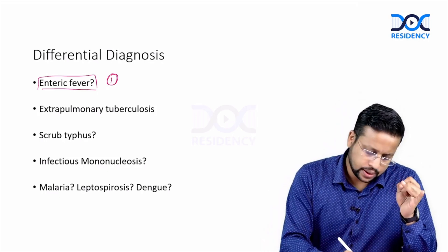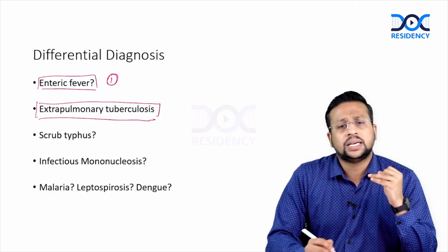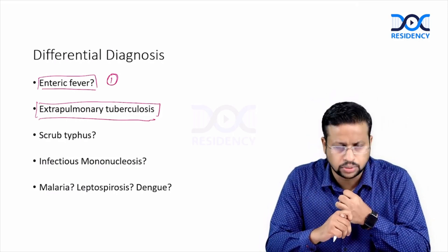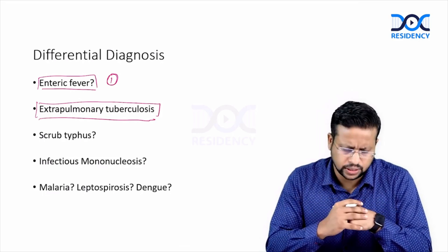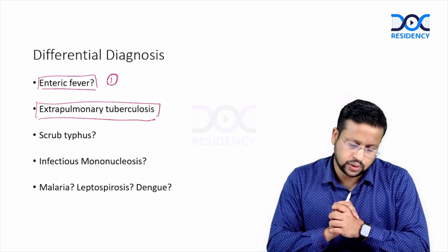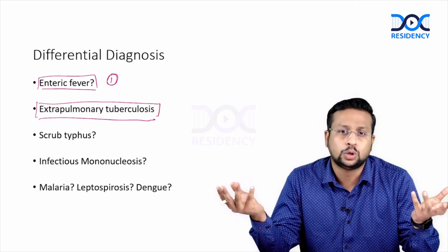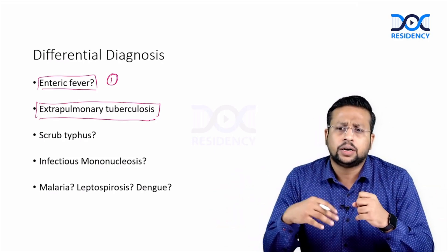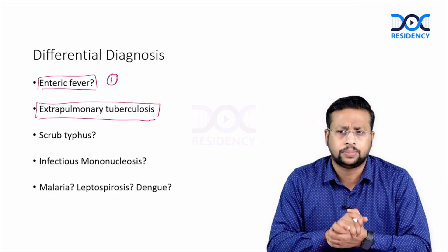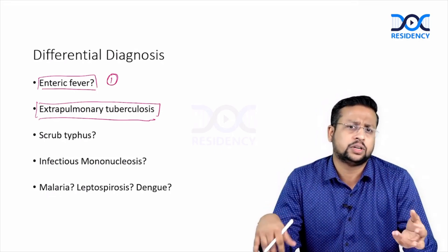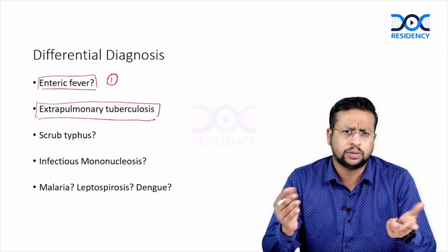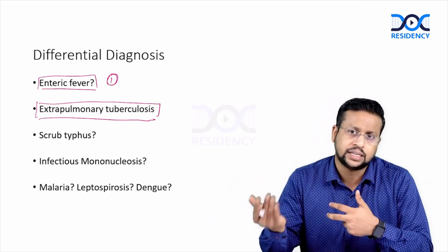Next, extra-pulmonary tuberculosis. In India, tuberculosis is so common that it should always be kept in mind. This patient does not have pulmonary symptoms, weight loss, or night sweats mentioned, so it's not a very likely diagnosis, but tuberculosis can present without localizing features — sometimes with only mediastinal lymphadenopathy and pure fever. So EPTB will be kept as a differential, and imaging may be done if initial investigations are negative.